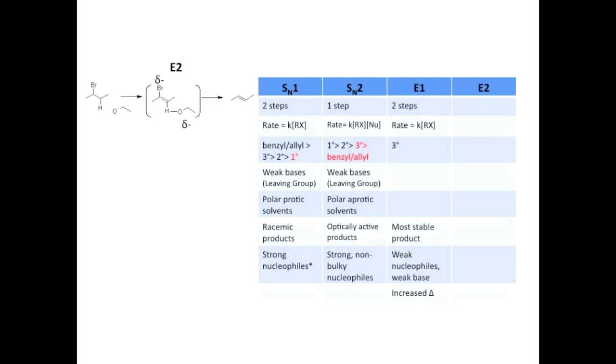Moving on to E2. You can see that we have a transition state just like SN2. Here's the mechanism a little bit bigger so you can actually see what's going on. A weak base gives its electrons to a beta-hydrogen, which gives its electrons to the carbon-carbon bond and kicks off the leaving group.